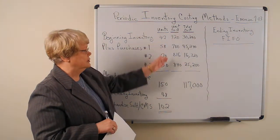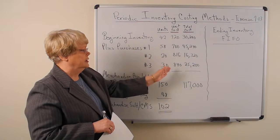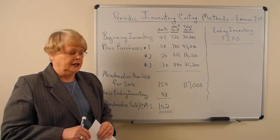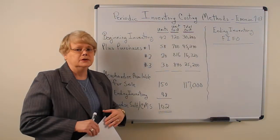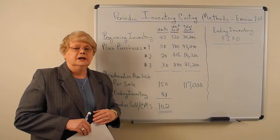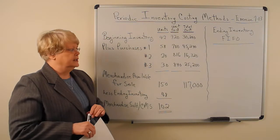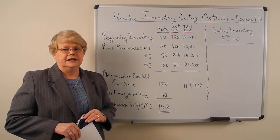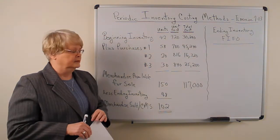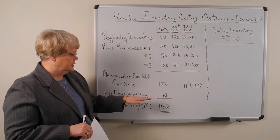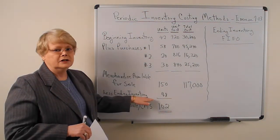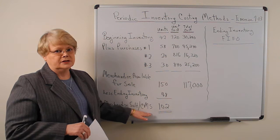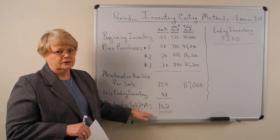Because as you can see, your inventory cost varied from time to time. So that's what we're going to do now using the FIFO — first in, first out — cost flow assumption. We're going to come up with a value of our ending inventory and a cost of merchandise sold.